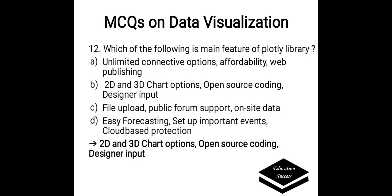Which of the following is a main feature of the Plotlib library? Options are: A. Unlimited connective options, affordably web publishing, B. 2D and 3D chart options, open source coding, designer input, C. File upload, public forum support, on-site data, D. Easy forecasting, setup important events, cloud board protection. Correct answer is B — 2D and 3D chart options, open source coding and designer input. It is the main feature of the Plotlib library.